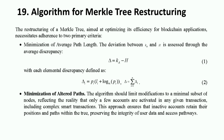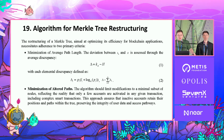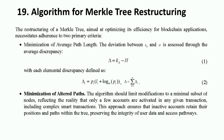The next part is the algorithm for Merkle tree reconstruction. The adaptive tree requires reconstruction in the Merkle tree in order to put more frequently used nodes higher and more rarely used nodes lower. The two criteria are: minimization of average path length, where the deviation between key and depth is assessed through average disparity with each element's disparity defined by a formula; and minimization of altered paths, where the algorithm limits modifications to a minimal subset of nodes, reflecting that only a few accounts are activated in any given transaction — including complex smart contract addresses and execution of subcontracts. This approach ensures that inactive accounts retain their positions and paths within the tree, preserving the integrity of user data and access pathways.